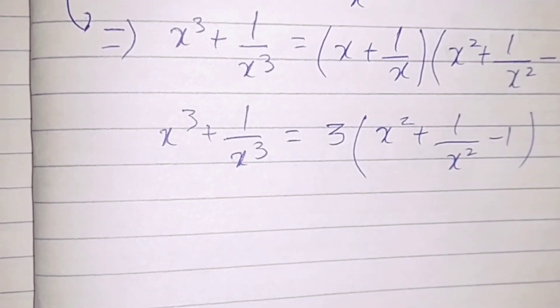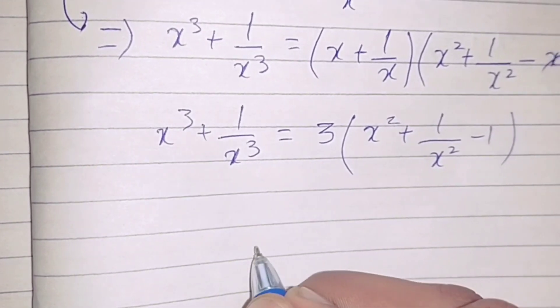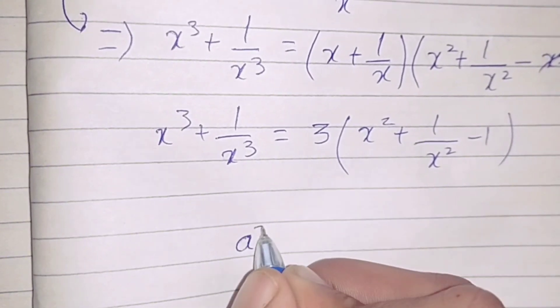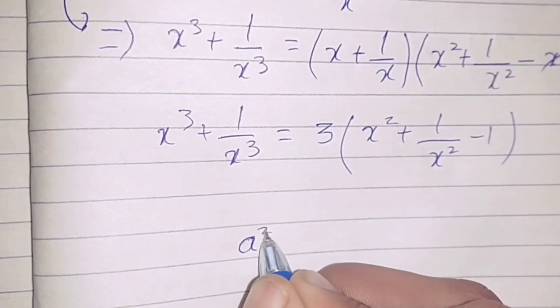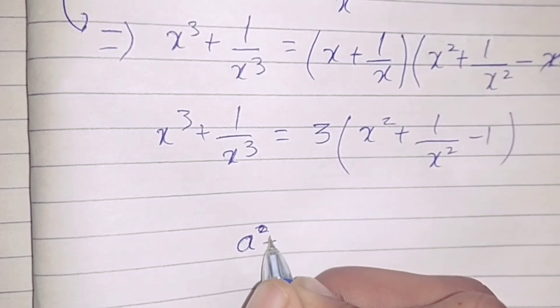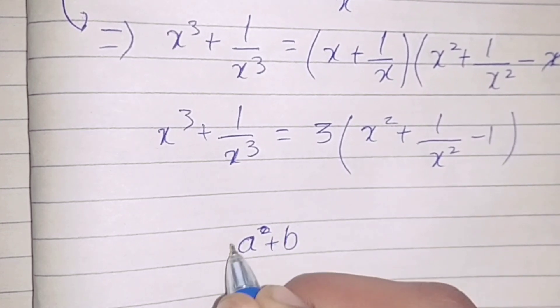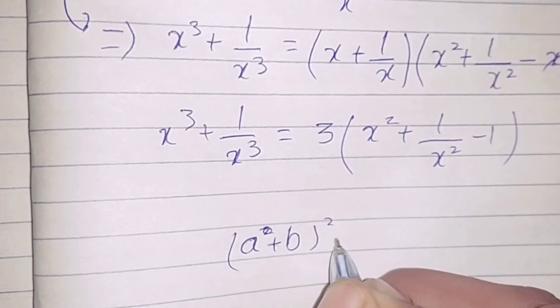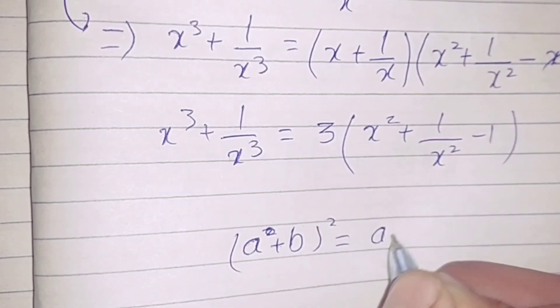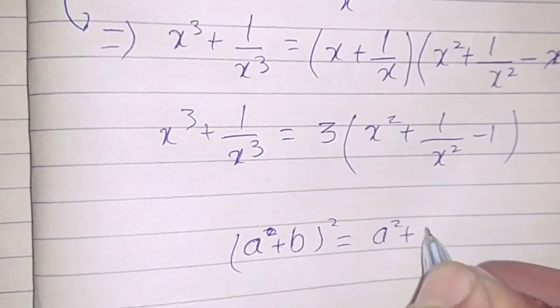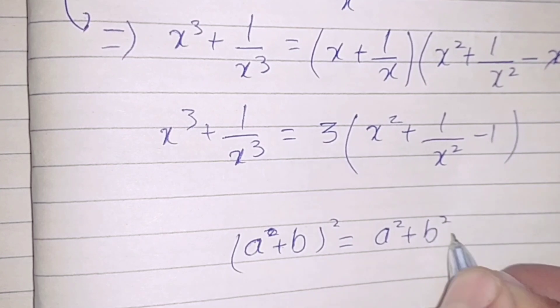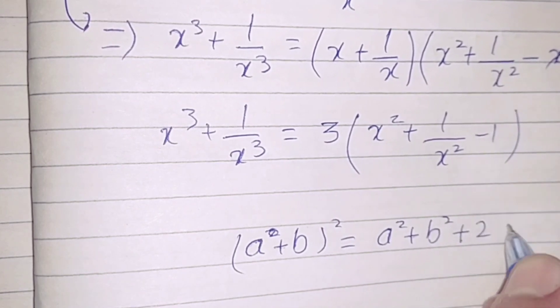We have another formula: a plus b whole square is equal to a squared plus b squared plus 2ab.